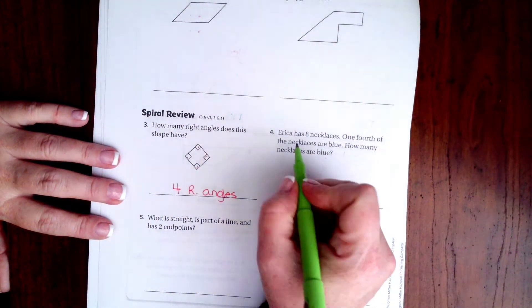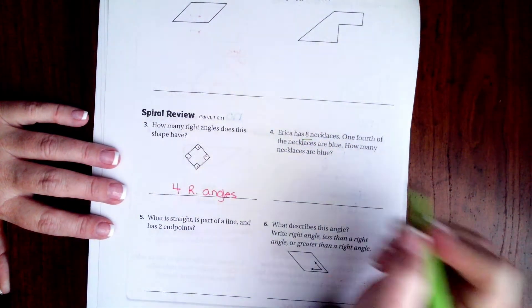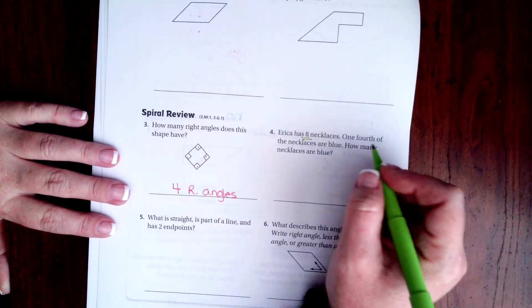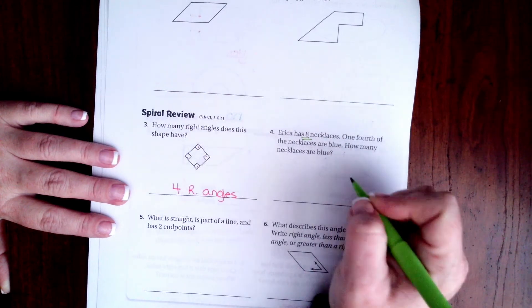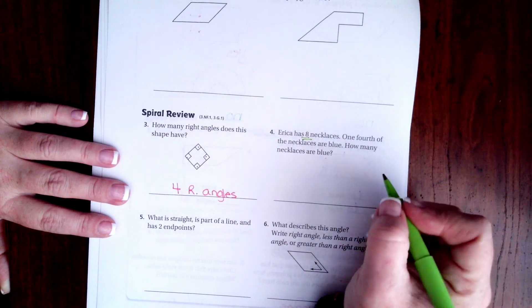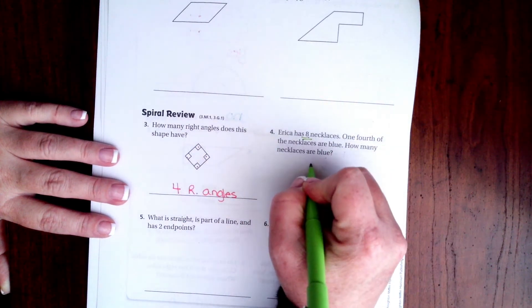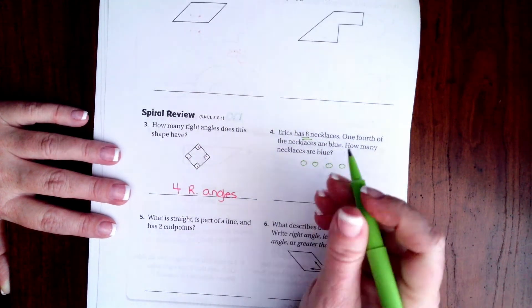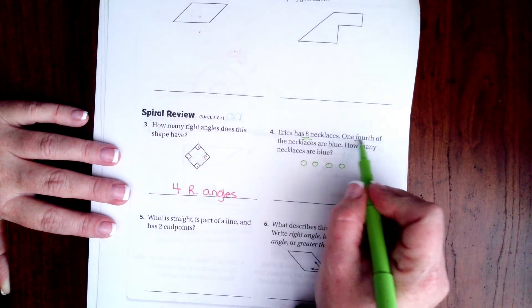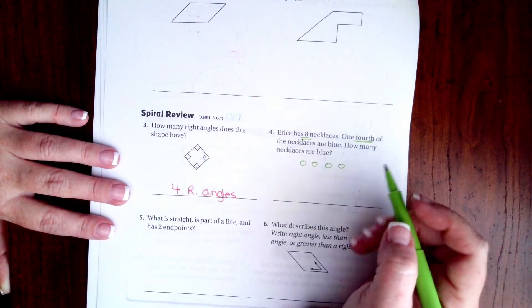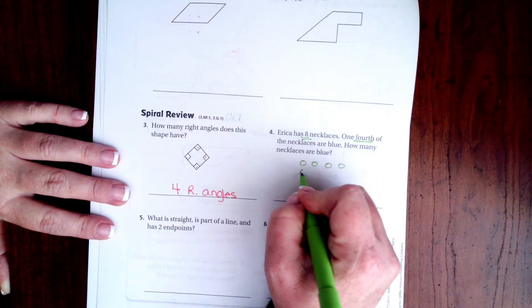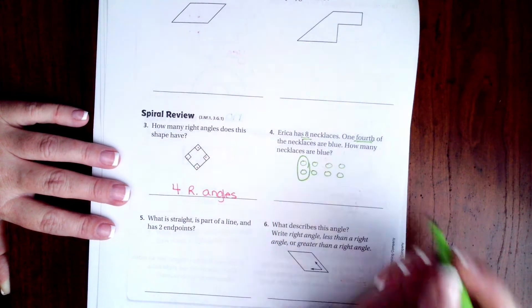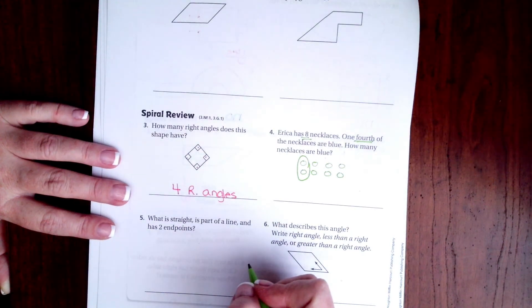Alright, Erica has eight necklaces. One fourth of the necklaces are blue. How many necklaces are blue? Well, let's do this. Let's put eight little circles and we're going to put them into four categories because we need fourth of them. So there's one, two, three, four, five, six, seven, eight. Now one fourth of those is two necklaces.